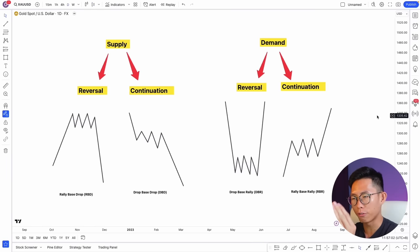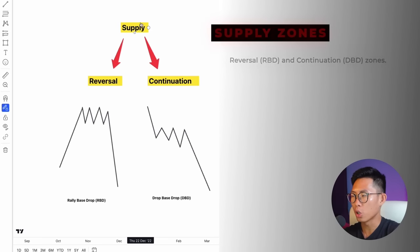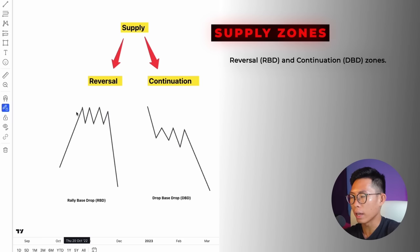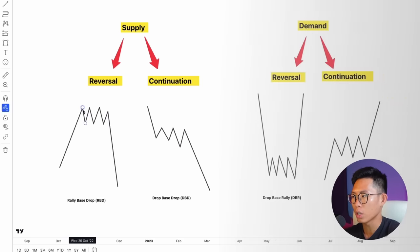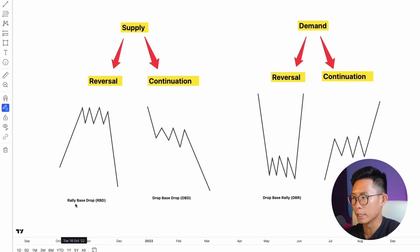To make things simple, I've split supply and demand zones into two categories: reversal zones and continuation zones. For supply zones, the reversal type is where price has a strong up move, then loses steam, starts consolidating, and then reverses into a downtrend. This is called a supply reversal zone — another name for it is rally-base-drop, which is literally what the name implies.